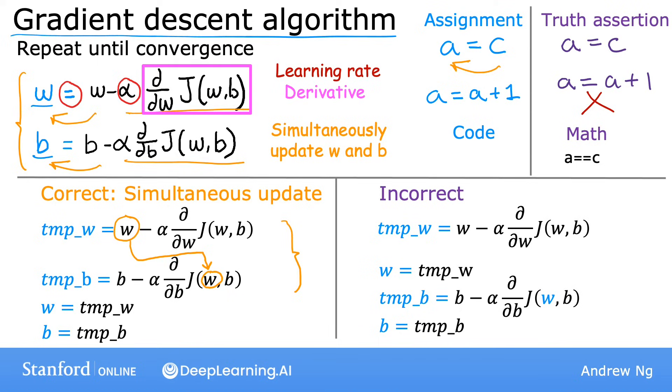The difference between the right-hand side and the left-hand side implementations is that if you look over here, this w has already been updated to this new value, and it's this updated w that actually goes into the cost function j of w, b. It means that this term here on the right is not the same as this term over here that you see on the left. And that also means this temp_b term on the right is not quite the same as the temp_b term on the left, and thus this updated value for b on the right is not the same as this updated value for variable b on the left.